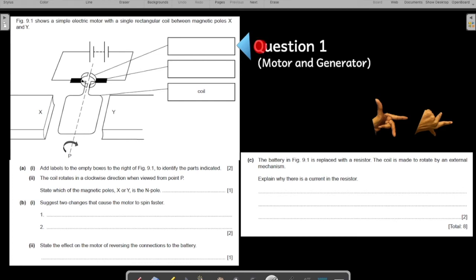Let us start with question number one of electromagnetism. This is a practice question from your IGCSE past paper.